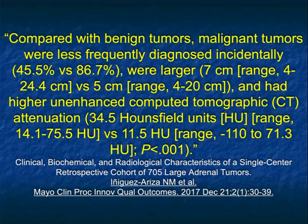Compared with benign tumors, malignant tumors were less frequently diagnosed incidentally. Remember that primary adrenal cortical carcinoma is incidental only 15% of the time, with 85% having symptoms. But with pheos, 60 to 70% are going to be incidental.